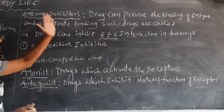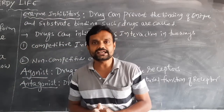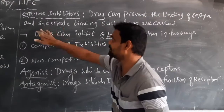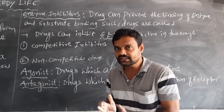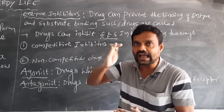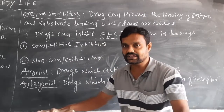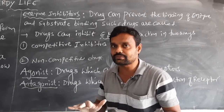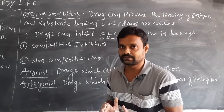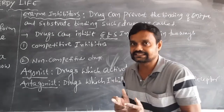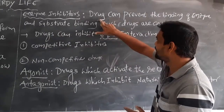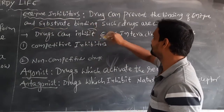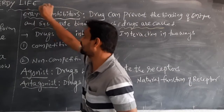Now, enzyme inhibitors. What is the meaning of enzyme inhibitors? Simply, the drug can prevent the binding of the enzyme and substrate. Generally in our body, the substrate reacts with the active site which is present on the enzyme, the reaction is completed, and the message is sent to the cells. But some drugs can prevent the binding of enzyme and substrate. Such drugs are called enzyme inhibitors.